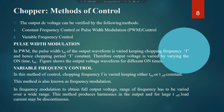In variable frequency control, the chopping frequency or time period is varied while either the on-time or the off-time is kept constant — this is called frequency modulation. To obtain full output voltage range, the frequency must be varied over a wide range. However, since frequency is being varied, it produces harmonics in the output. If the off-time T_off is very large, the load current may become discontinuous. So for continuous conduction, T_off should not be large.